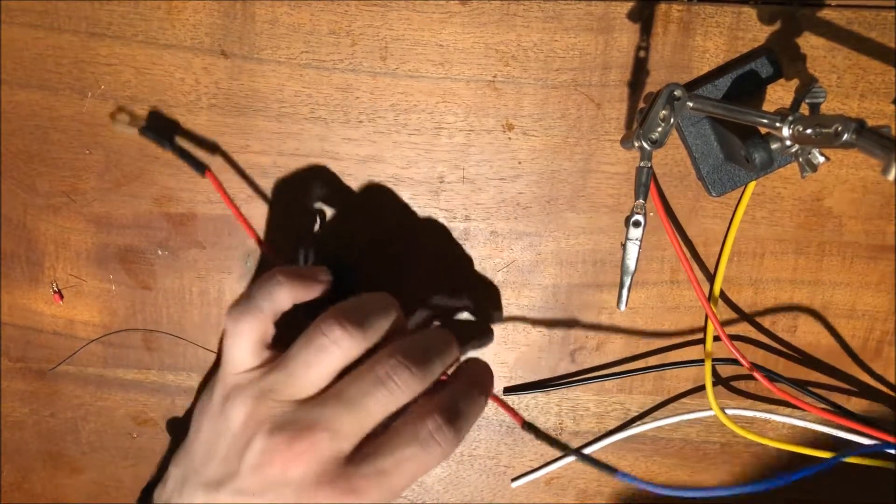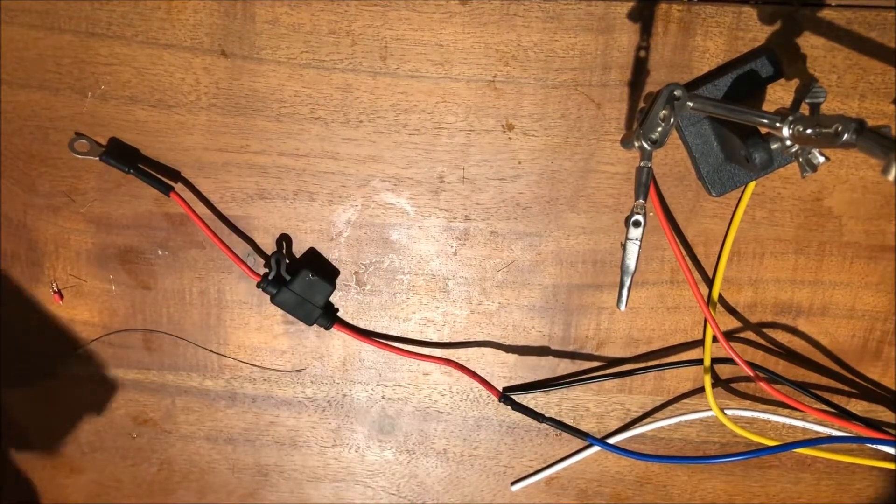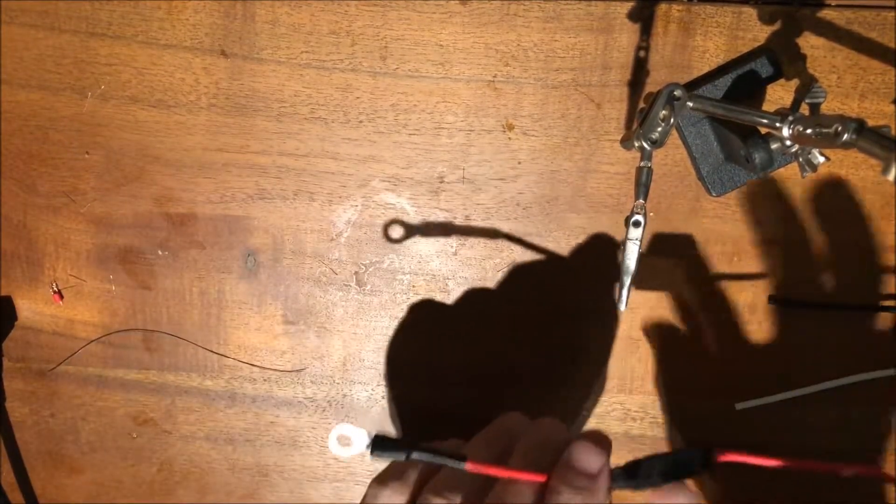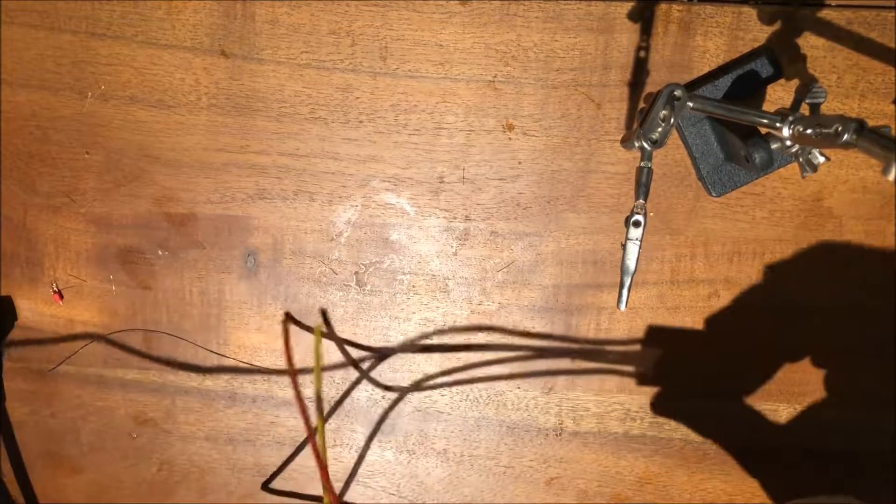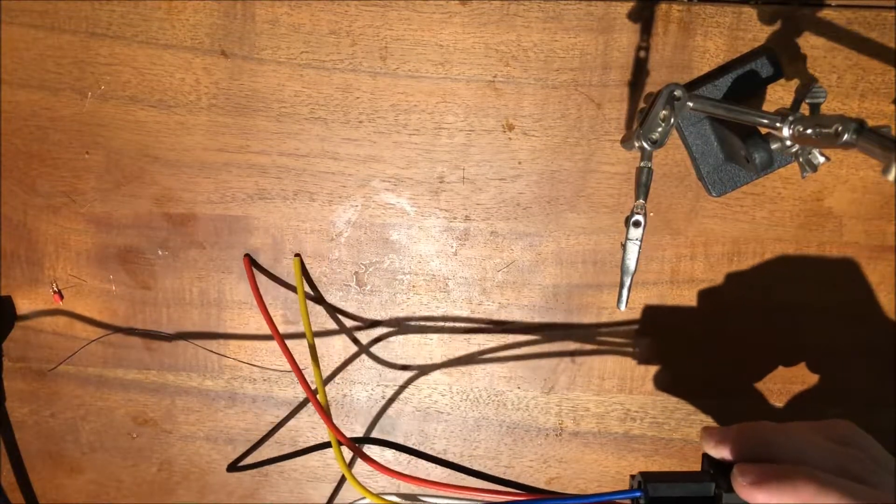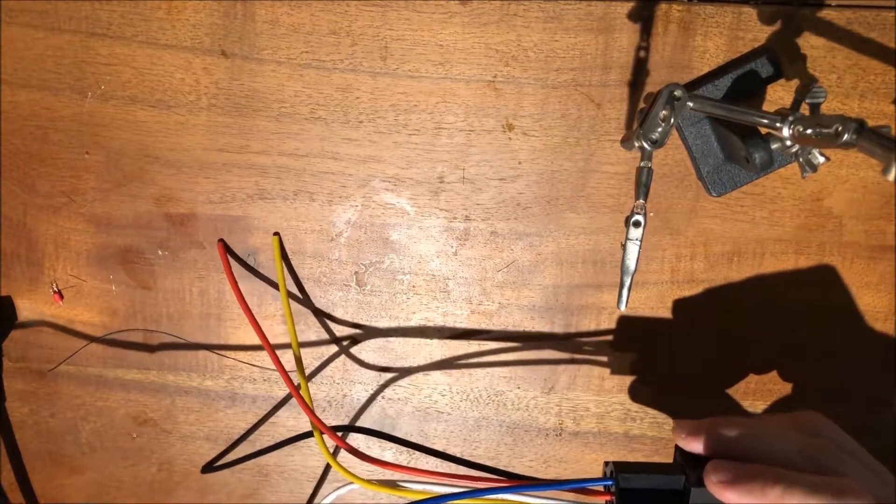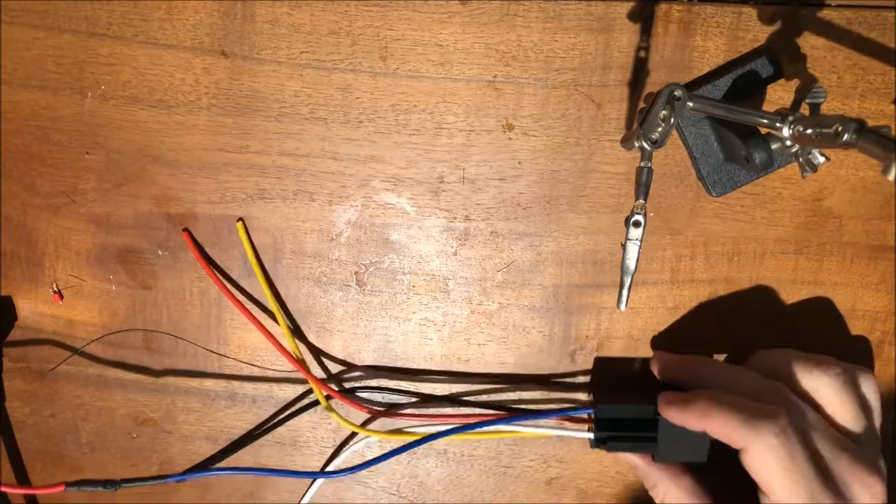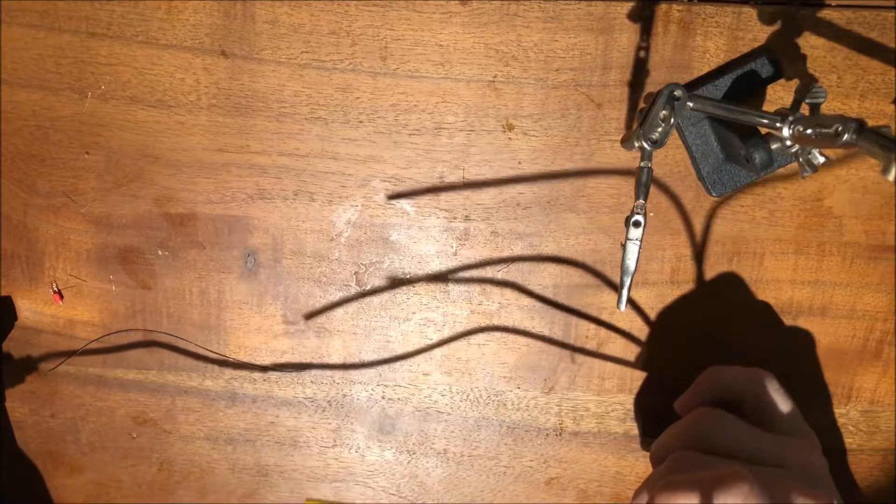And there we go. So we've got that connection that goes from the battery to a fuse over to the relay. So the next step here is going to be to bring this whole setup down to my motorcycle and make the rest of the connections.